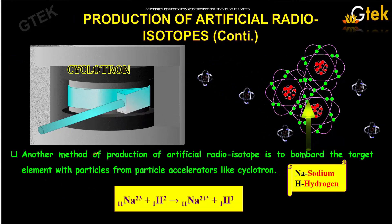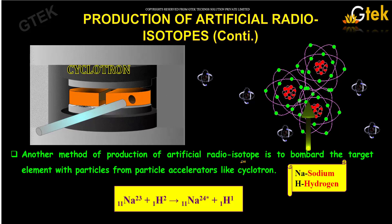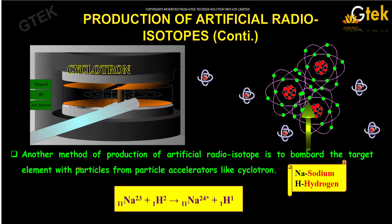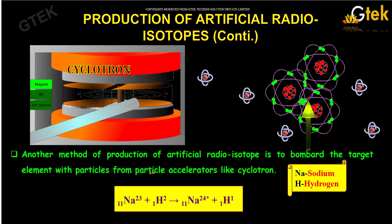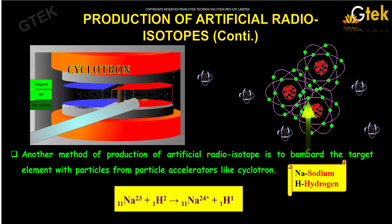Another method of producing artificial radioisotopes is to bombard the target element with particles from particle accelerators like cyclotron.